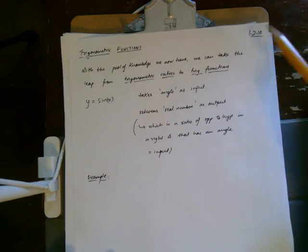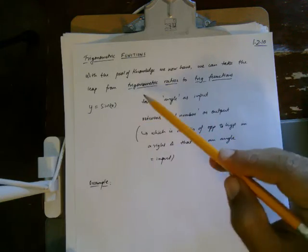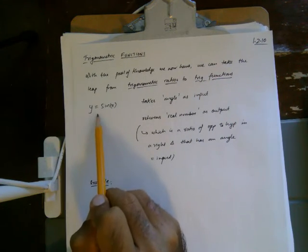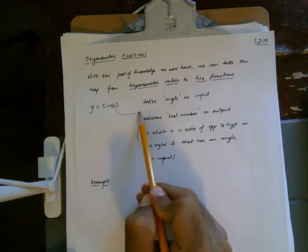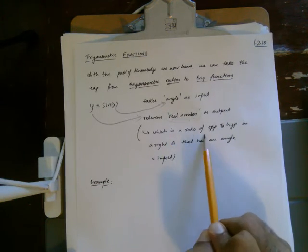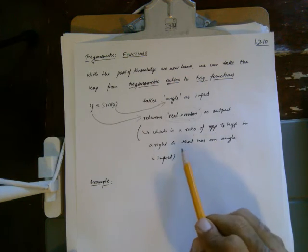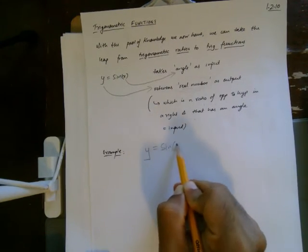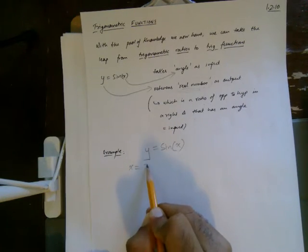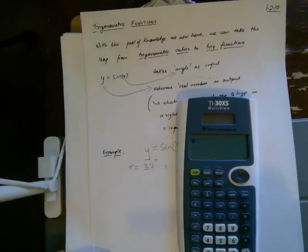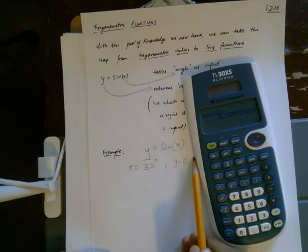As a conclusion, the key point is that we can make the leap from trigonometric ratios to trigonometric functions. We write y equals sin x, where the input x is an angle and it returns a real number as output — specifically the ratio of opposite to hypotenuse. For example, if y equals sin x and x equals 32 degrees, plug into the calculator in degrees mode: sin of 32 rounds to approximately 0.53.